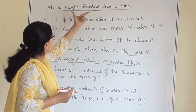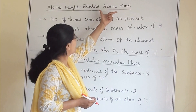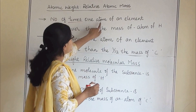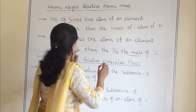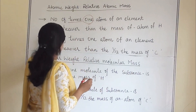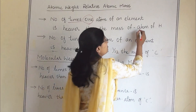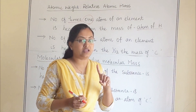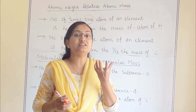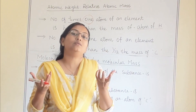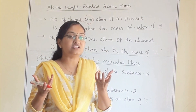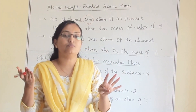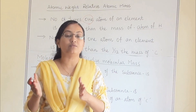Atomic weight — we are learning relative atomic mass. One atom of an element — any element you can take — one atom of that element is heavier than the mass of one atom of hydrogen. That means, for any atom of any element you take, how many times heavier is it than one atom of hydrogen?